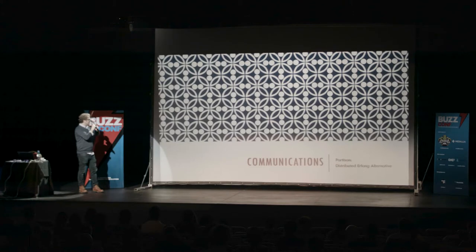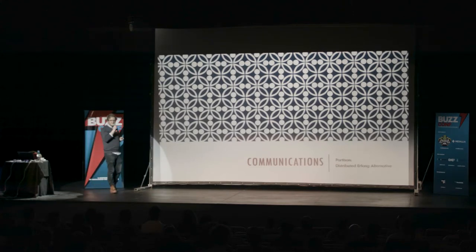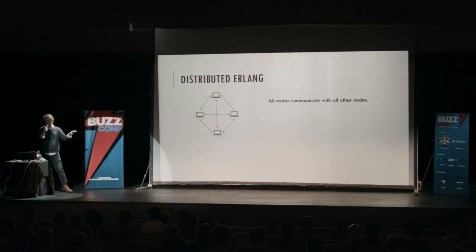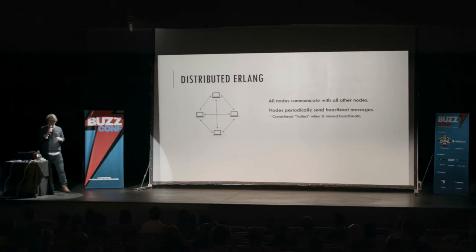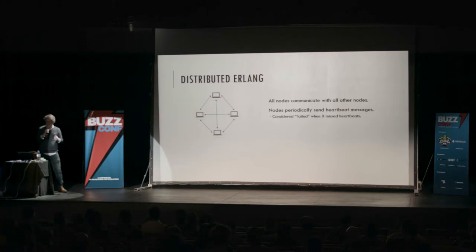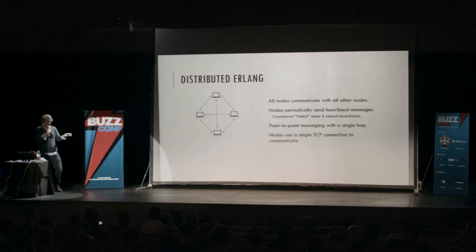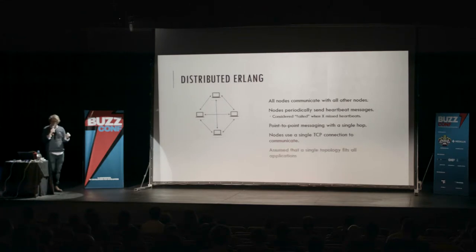Let's talk about Partisan, a replacement for distributed Erlang. Distributed Erlang allows groups of Erlang nodes to communicate — all nodes communicate with all other nodes, nodes periodically heartbeat neighbors, and detect failure when a node drops a certain number of heartbeats. It provides single-hop point-to-point messaging, and nodes communicate using a single TCP connection. It's assumed this all-to-all topology is ideal and one size fits all. First: a single TCP connection is a bottleneck. Second: all-to-all heartbeating is expensive. Third: distributed Erlang is not one size fits all.